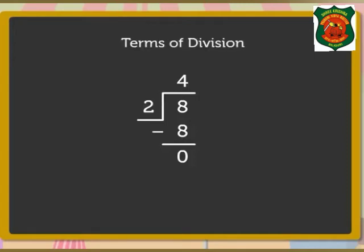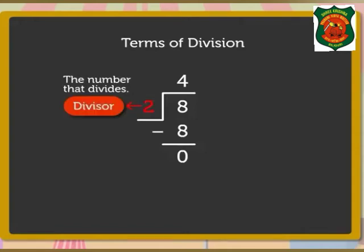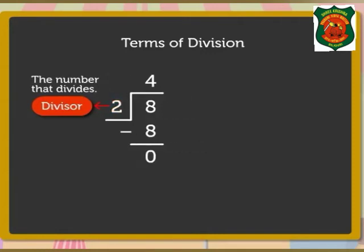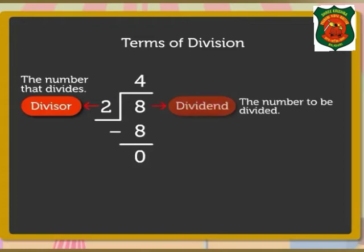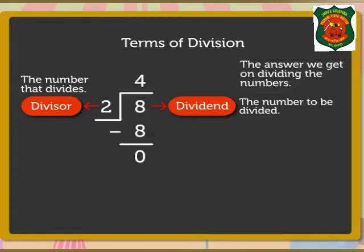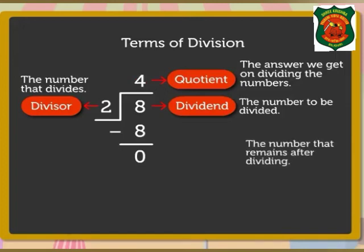Let us learn the terms of division. A number that divides another number is called the divisor. Here, number two is the divisor. The number to be divided is called the dividend. Here, number eight is the dividend. The answer that we get on dividing the numbers is called the quotient. Here, number four is the quotient. The number that remains after dividing is called the Remainder. Here, number zero is the Remainder.